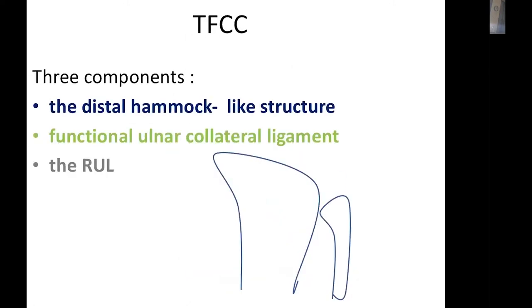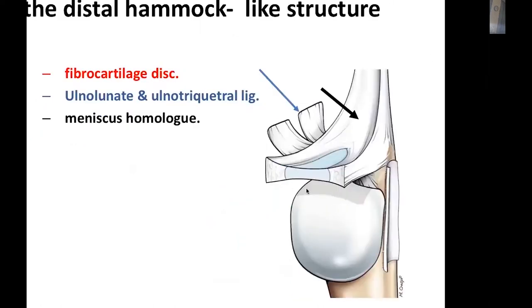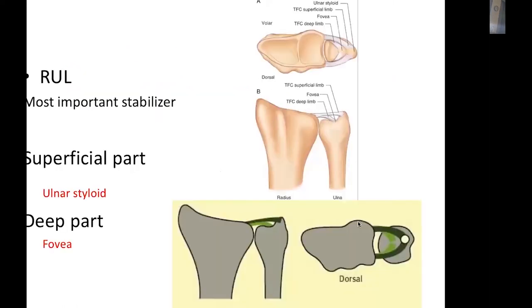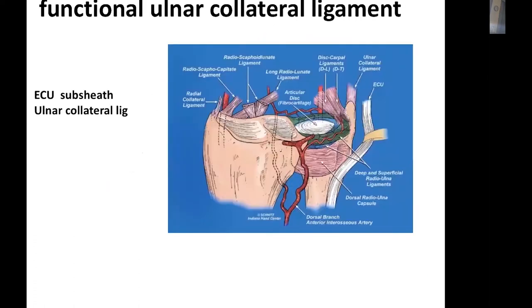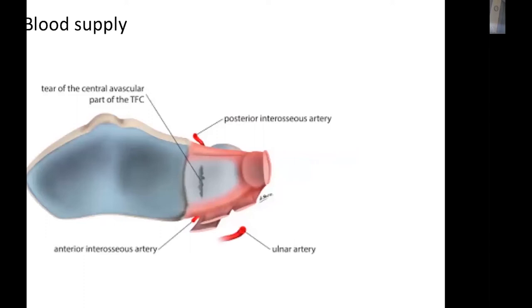The TFCC is formed of three main components: the distal hammock part, the functional ulnar collateral ligament, and the radioulnar ligament, which has the stabilizing role. The distal hammock part is formed mainly from the articular disc, ulnolunate ligament, ulnotriquetral ligament, and meniscus homologue, while the radioulnar ligament extends from the dorsal and volar margin of the sigmoid notch into the fovea. It prevents radioulnar subluxation. The central part is devoid of blood supply and will not heal, so central tears require debridement and peripheral tears require repair — similar to knee meniscal injury.